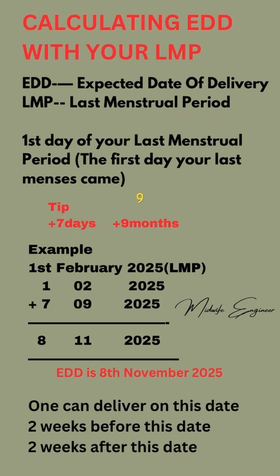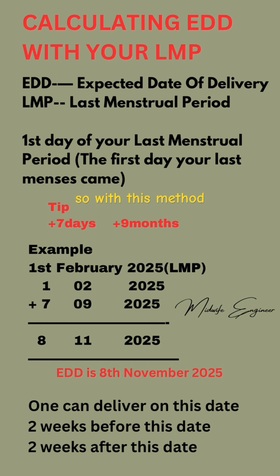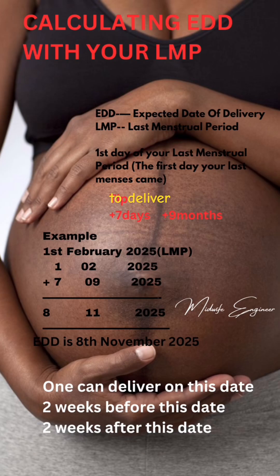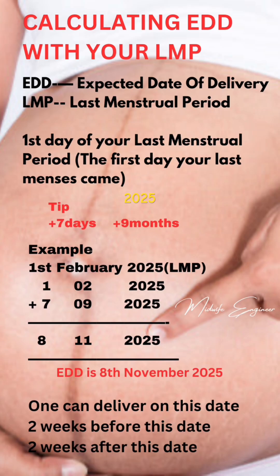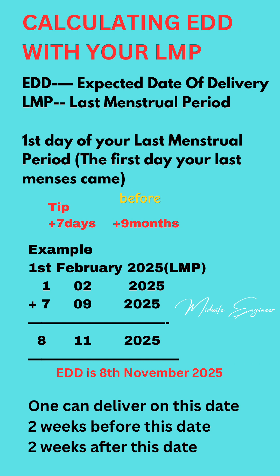And nine months to the two, that is the second of the calendar chart, making 11. So with this method, you are expected to deliver on the 8th of November, 2025. You can deliver two weeks before that date, two weeks after that date, or even on the same day.